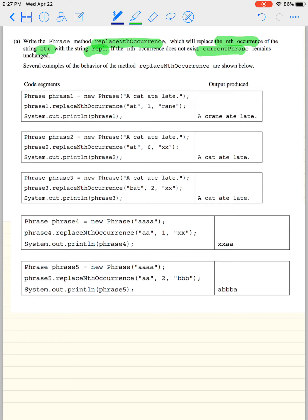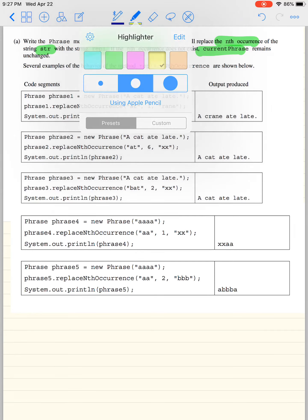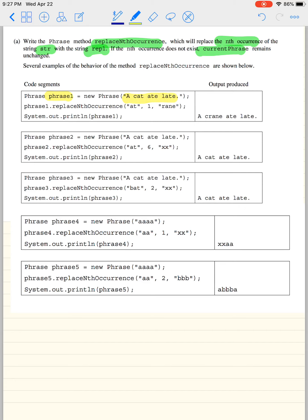Here are some examples. So let's take a look at this example. You have this phrase, we need the yellow highlighter, we have this phrase one, that says a cat ate late. And what's happening in this case is if you call this method, the method replaceNthOccurrence, this is going to be your string. And this is going to be what you're going to replace it with, you want the first occurrence of it. So when do you first see at? We see at right here, for the first time.